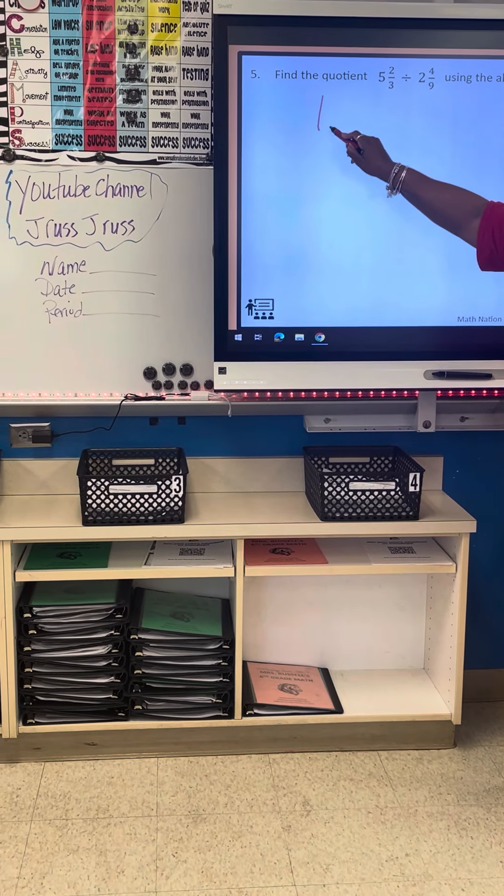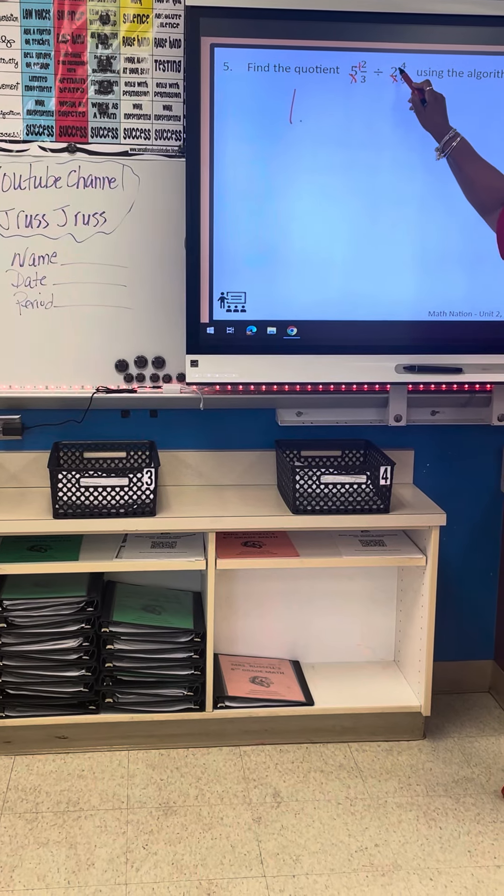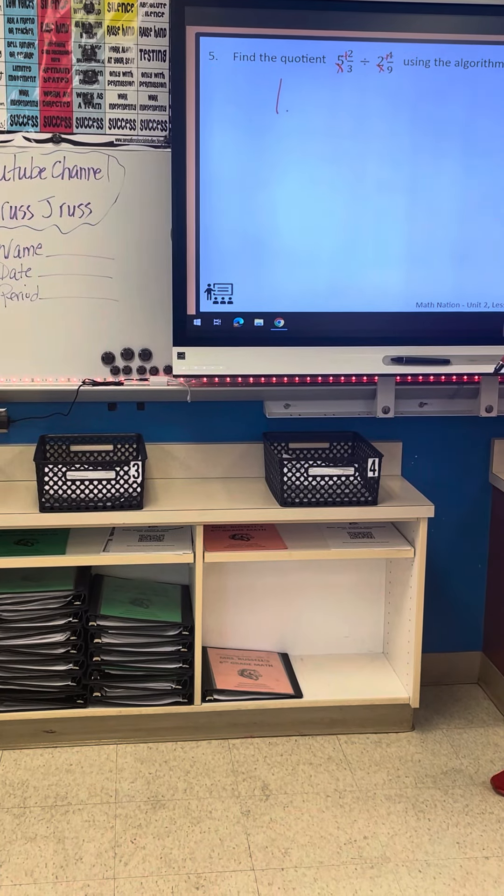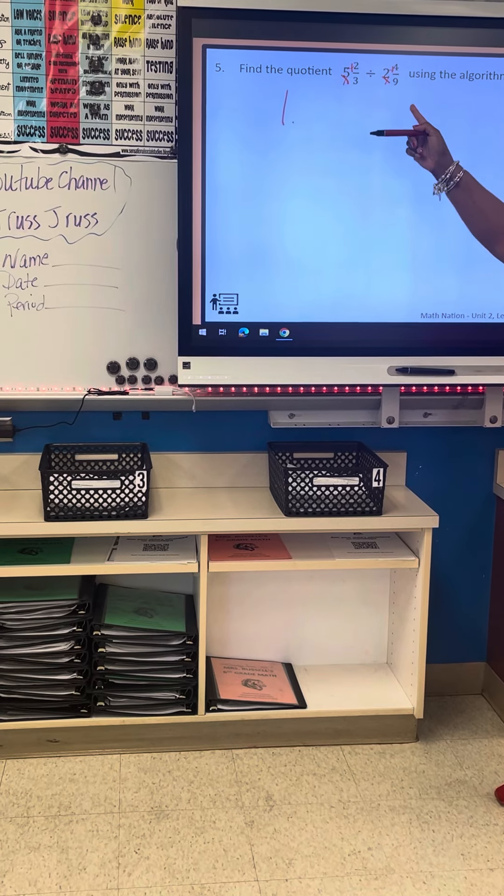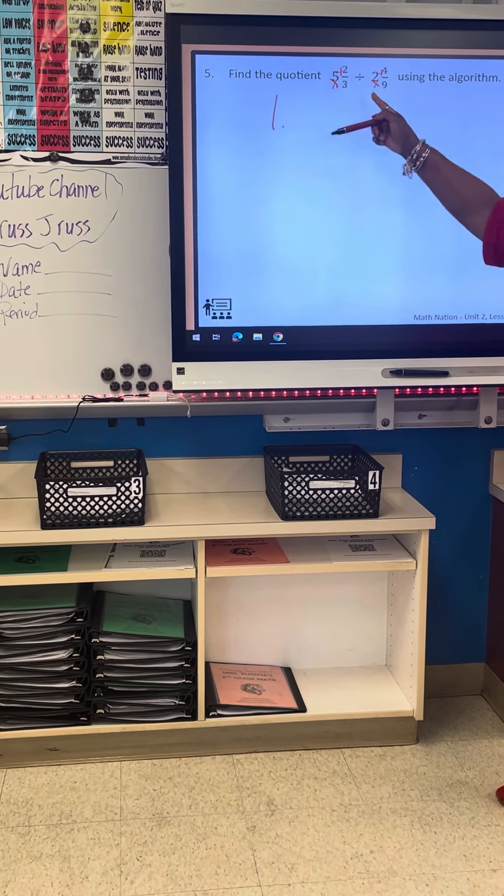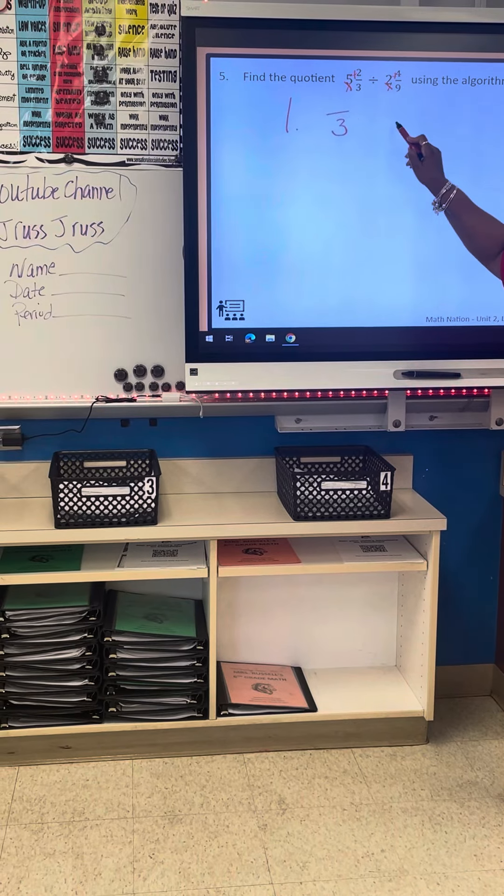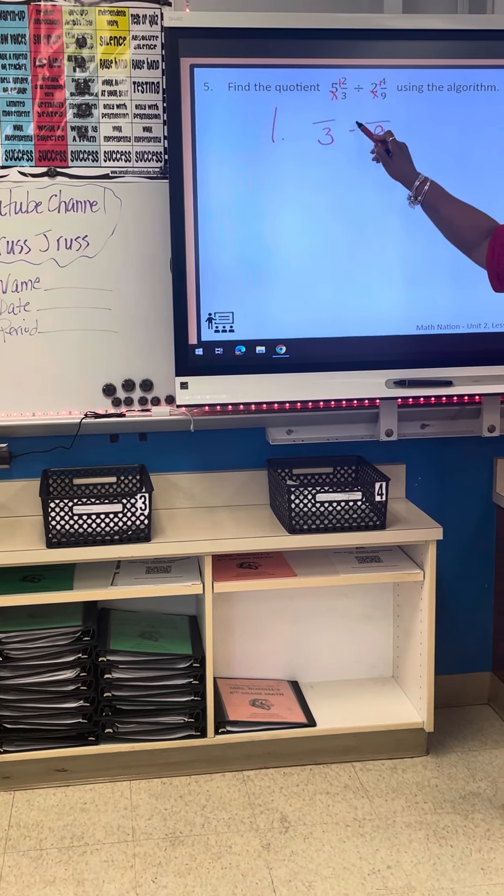So step one, I'm going to do this on the original problem. Now I'm going to make them fractions. They're mixed numbers now, not fractions. I'm going to bring my three down, my nine down, and put a division sign.